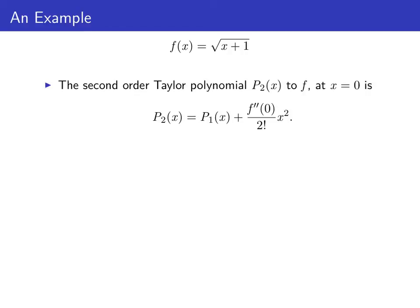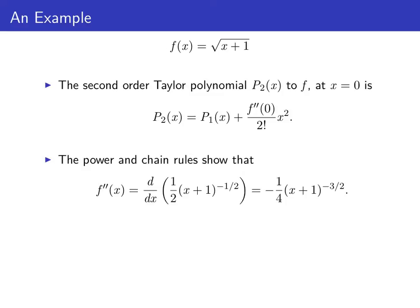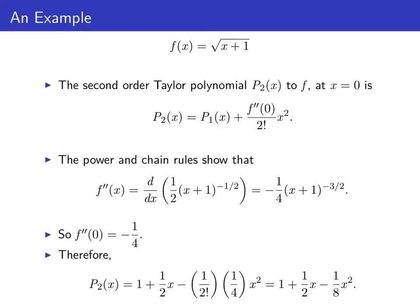Since p₂(x) is p₁(x) plus f''(0) over two factorial times x squared, and we already know p₁(x), we just need to find the second derivative of f at zero. The power and chain rules show that f''(x) is negative one quarter times (x+1) to the negative three halves power. This makes f''(0) equal to negative one quarter. So p₂(x) is p₁(x) — that is, one plus one half x — minus one quarter times one over two factorial times x squared. Therefore p₂(x) = 1 + (1/2)x − (1/8)x².